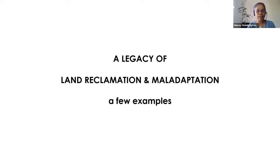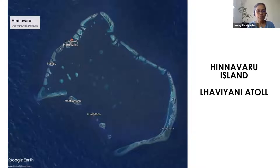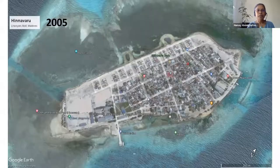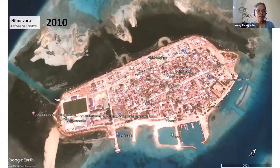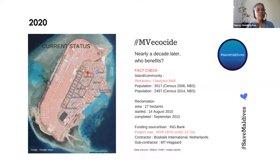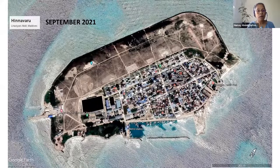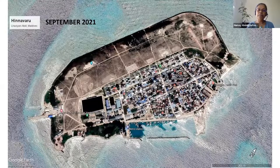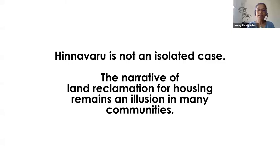This is Hinnemar Island in Laviani Atoll. This is what the island looked like in 2005 — already not natural. In 2010, you can see modifications happening around the island. In 2020, the reclamation remains dormant and unused, and this is what the island looks like in 2021. The rationale for this reclamation was housing, among other things, but we find that this does not really work.